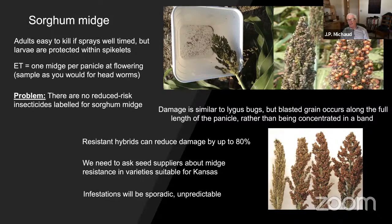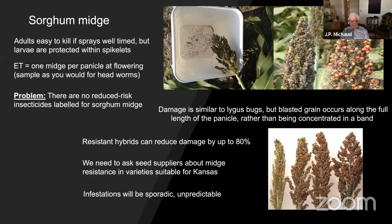A large component of management down south is planting varieties with midge resistance. There are some good traits for midge resistance that can reduce damage by up to 80% and increase the threshold for spraying to five midges per head. The problem is I have no idea what varieties with midge resistance would be suitable for our region. This is a question we need to start putting to the seed suppliers: do we have midge resistance in any sorghum varieties suitable for our maturity groups? If this problem gets more serious or widespread, it might become a new breeding objective for sorghum for Kansas.